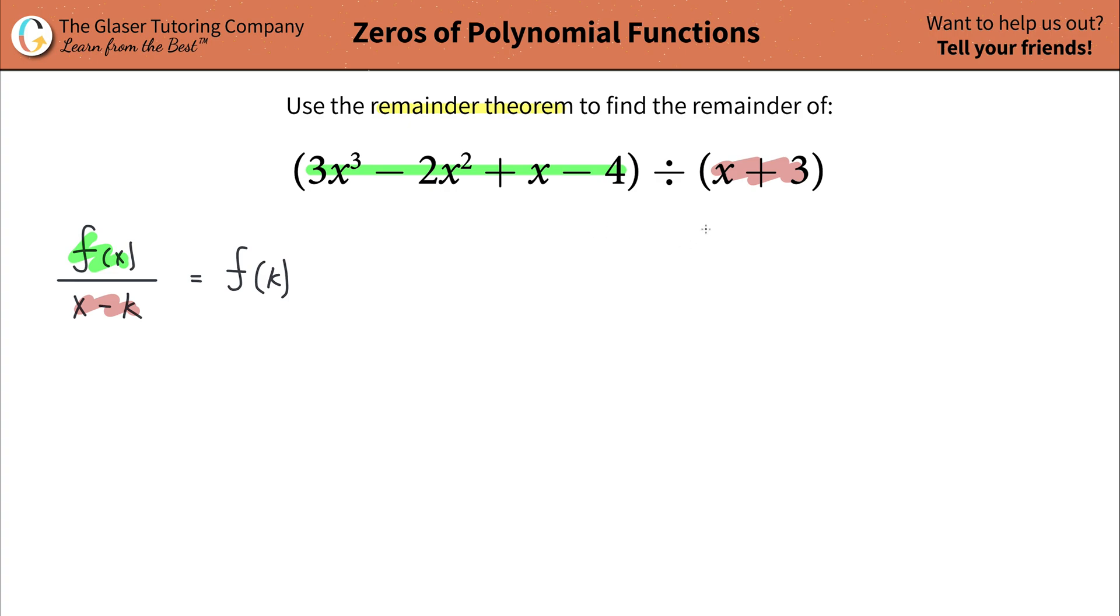Okay, now the easy way to find the k value of the divisor is to actually set it equal to zero. Set it equal to zero and solve this bad boy for x. So x is equal to negative three. And this right here, ladies and gentlemen, this is your k value. This is k.